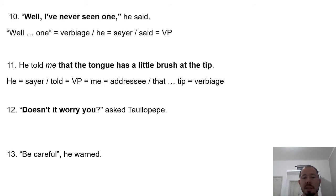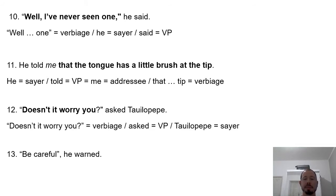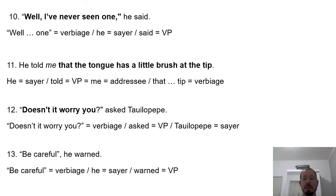'Doesn't it worry you?' asked Tawilopip. 'Doesn't it worry you?' is the verbiage — what is being asked. 'Asked' is the verbal process. And Tawilopip is the sayer. And: 'Be careful,' he warned. 'Be careful' is the verbiage; he is the sayer; and 'warned' is the verbal process.